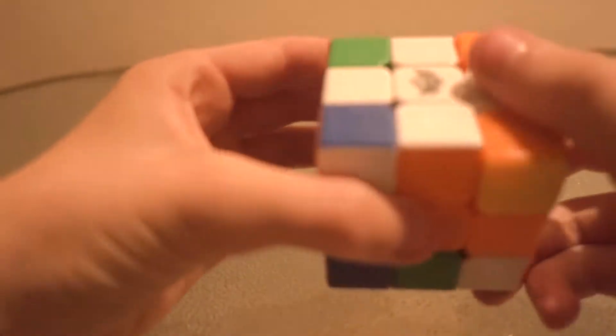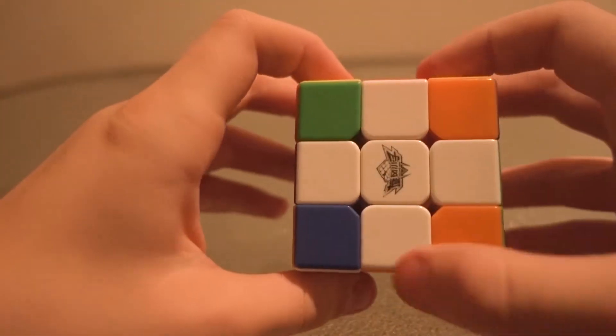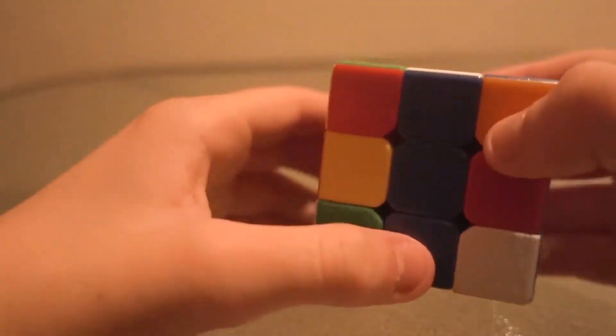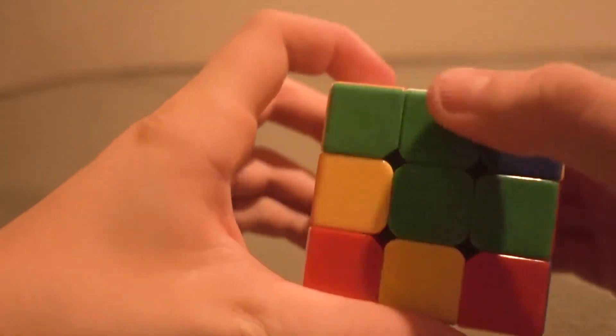Now I'll just get rid of that right now just for the sake of how it looks. So now we have our white cross matching up with orange, blue, red, and green.